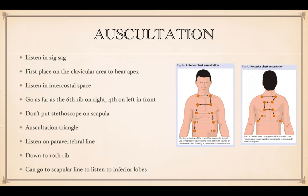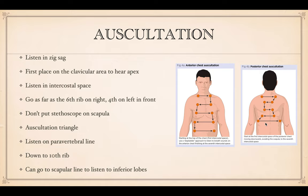When you listen to the lungs, you want to listen in a zigzag. Anteriorly, place the scope right on the clavicular area to hear the apex of the lungs, then listen in the intercostal spaces — first left, then right, going down. You really stop around the sixth to fourth ribs anteriorly, because below that is viscera. On the back, do the same thing but listen in the auscultation triangle — don't put your stethoscope on the scapula. Listen on the paravertebral line, go down to about the tenth rib in the back, versus the fourth or sixth rib in the front. Around the tenth rib area, you can go to the scapular line to listen to the inferior lobes.